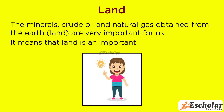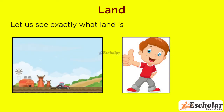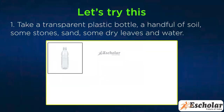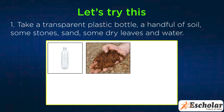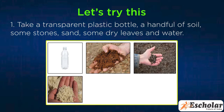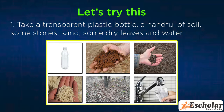Land is an important resource. Let us see exactly what land is made of. Let's try this experiment. First, take a transparent plastic bottle, a handful of soil, some stones, sand, some dry leaves, and water.